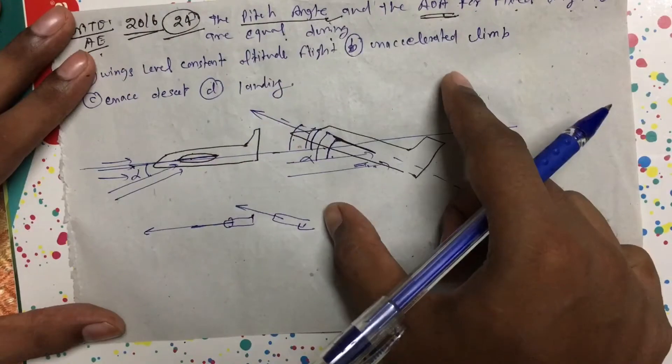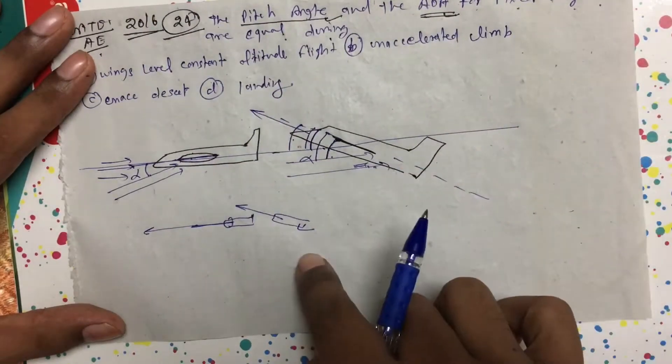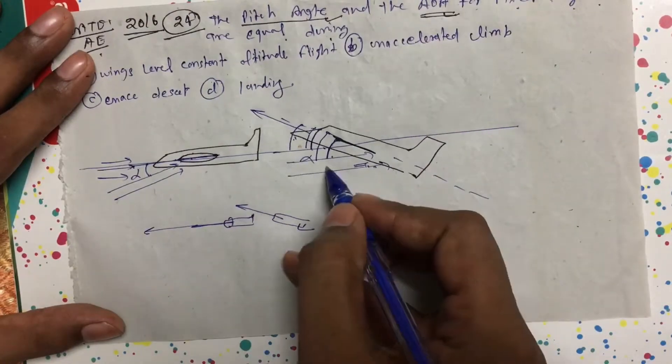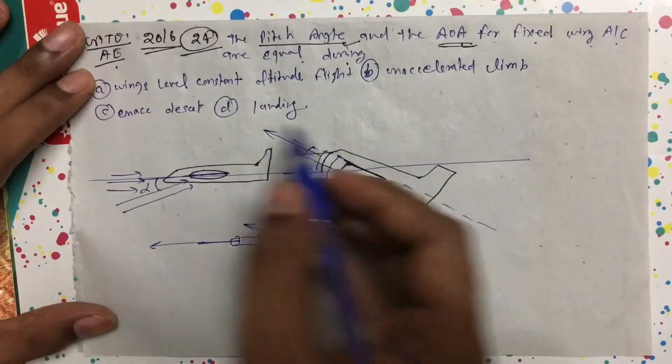Same thing if aircraft will turn downward - I mean descent or landing. In case of descent or in case of landing, again your pitch angle and alpha is not equal. So only the first option is correct.